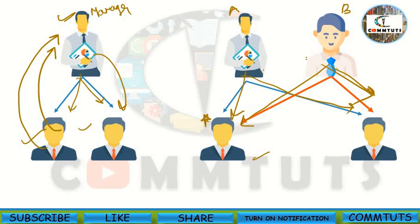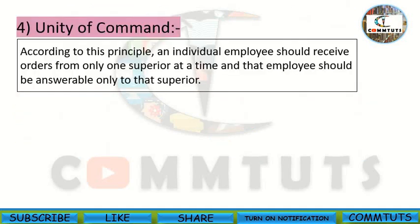According to Henry Fayol, having one superior is the right approach and dual subordination is the wrong approach. According to this principle, an individual employee should receive orders from only one superior at a time, and that employee should be answerable only to that superior.